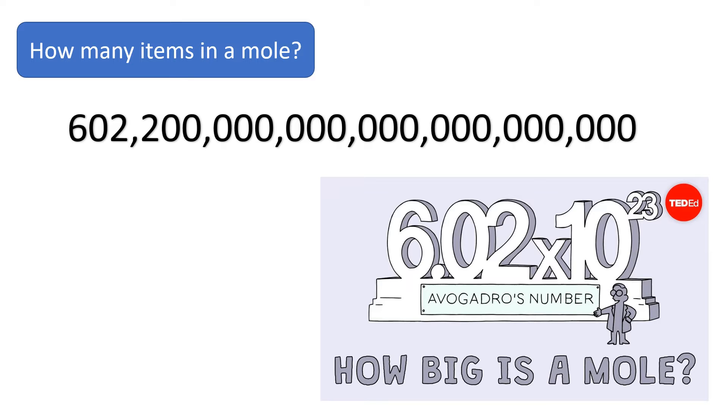Now the guy who came up with this number was a guy named Avogadro, which is why we call it Avogadro's number. Or sometimes you hear it as Avogadro's constant because this number is constant. One mole, 6.02 times 10 to the 23, that never changes. It is a constant.